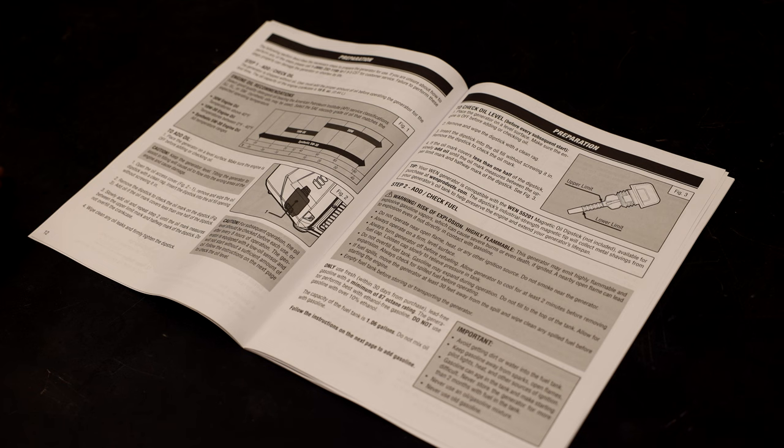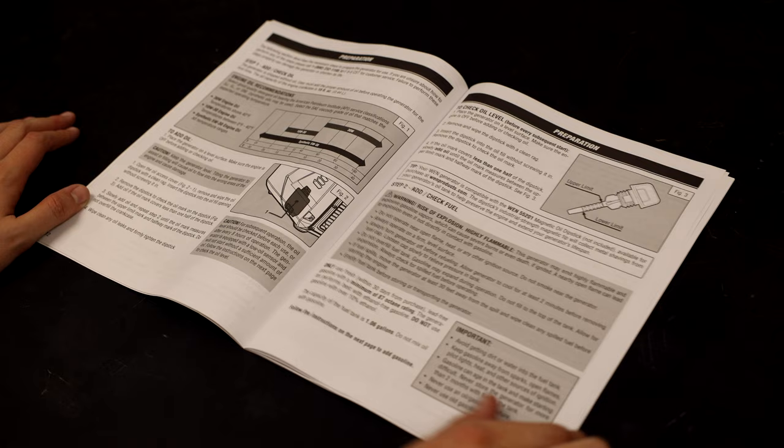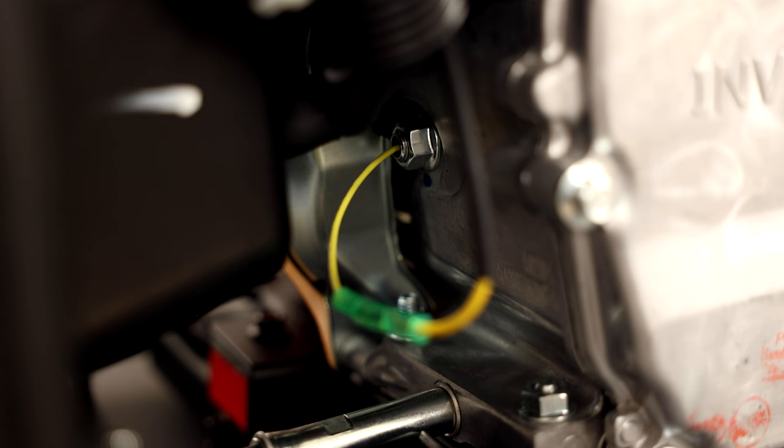Step 4: Follow the steps laid out in your owner's manual to start the generator. If your generator starts, you're all set. If not, reconnect the connector and follow the other steps in the troubleshooting section of your owner's manual. Thanks for watching.